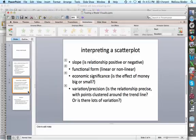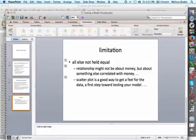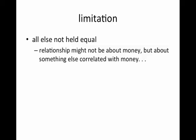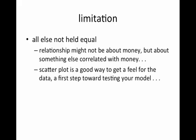Let's go back to the PowerPoint. When you interpret a scatterplot, you're looking for what is the relationship, positive or negative? What's the functional form, linear or nonlinear? What's the economic significance? Is this a big deal or not such a big deal? And how precise is it? There is a limitation to looking at a scatterplot and that's that you're not holding anything else equal. The relationship might not be about money, but about something else that's correlated with money. And that's why you're going to have an X2 variable. A scatterplot is a good way to get a feel for the data, a first step toward testing your model. And in the next couple of weeks, you'll be testing it more formally.